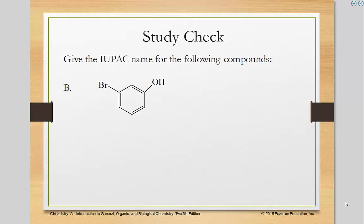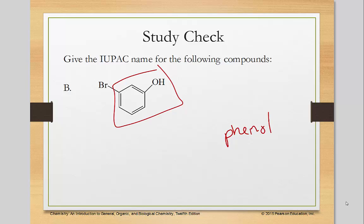Here's a phenyl group. As I said, this is considered phenyl. I don't have to tell people where the OH group is because when we talk about benzene rings, phenols automatically number one for that OH. Count in the direction closest to the next substituent, which would be to the top, and that gives us 3-bromo — so the name is 3-bromophenol.